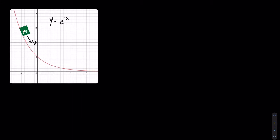If there's anything we know about the system, it's that the block has to be touching the ramp at all times. For this problem, clearly the block will be a little bit off of the ramp, but let's just assume that the point we're finding the equation of motion for is always on the ramp. We know that the position of this block is going to have the vector x comma e to the power of negative x. This just means that when you know the x value, you know the y value is going to be e to the power of negative x.